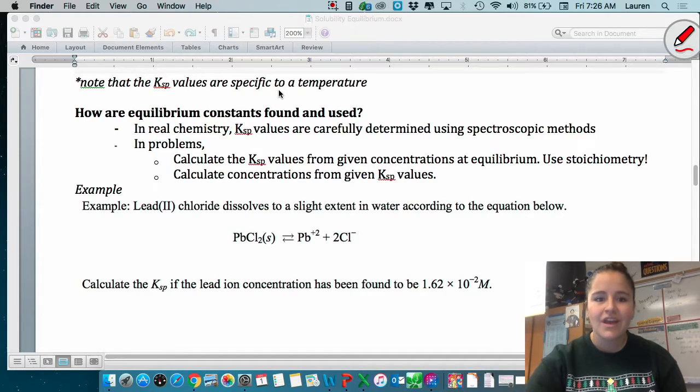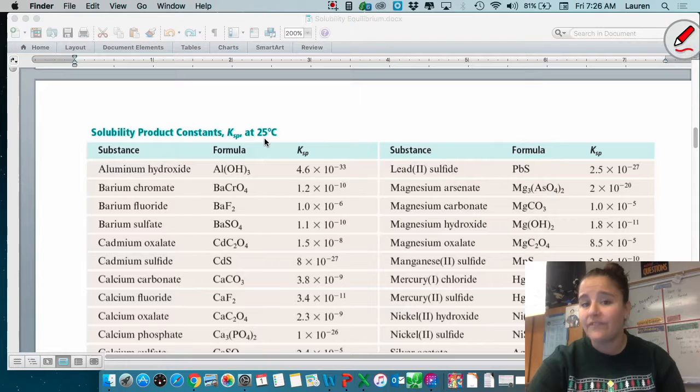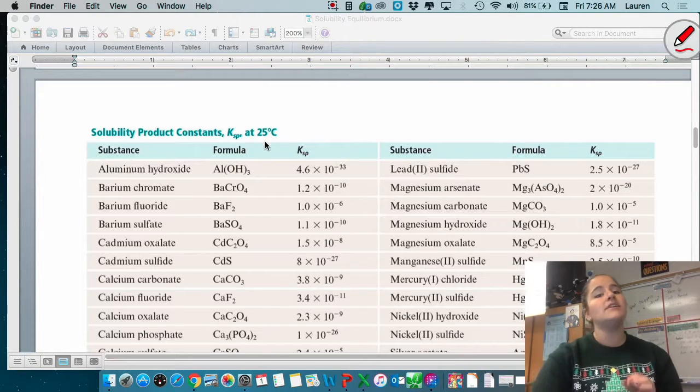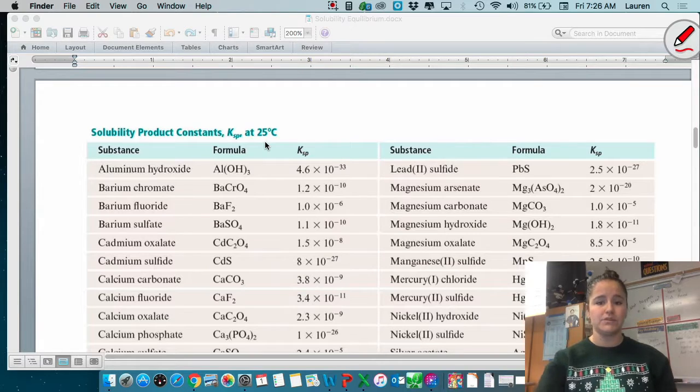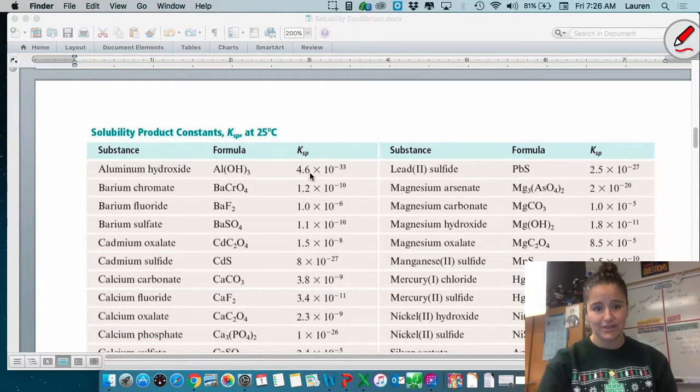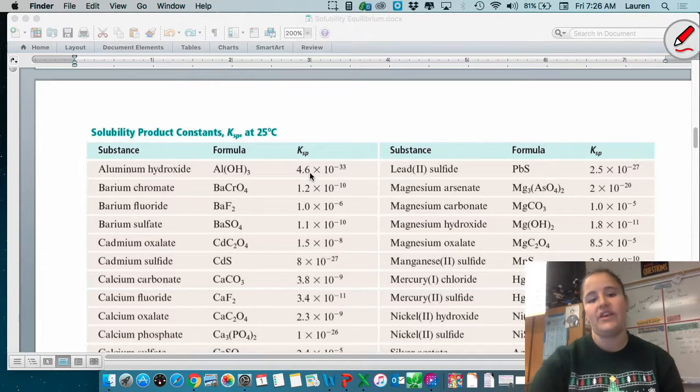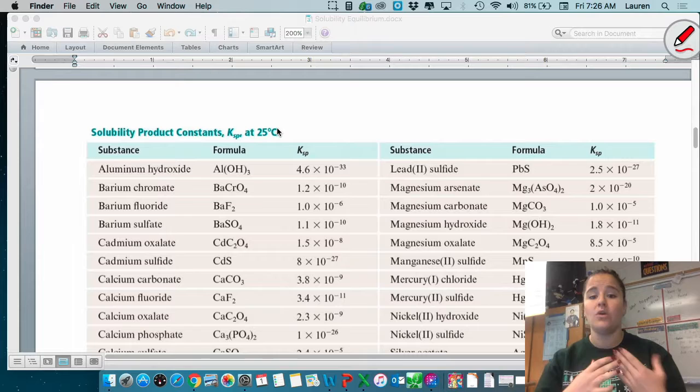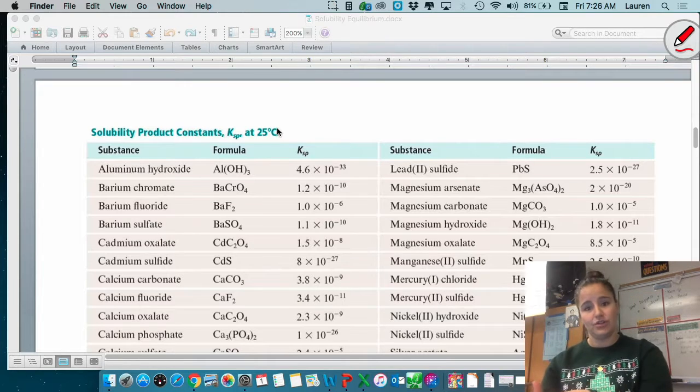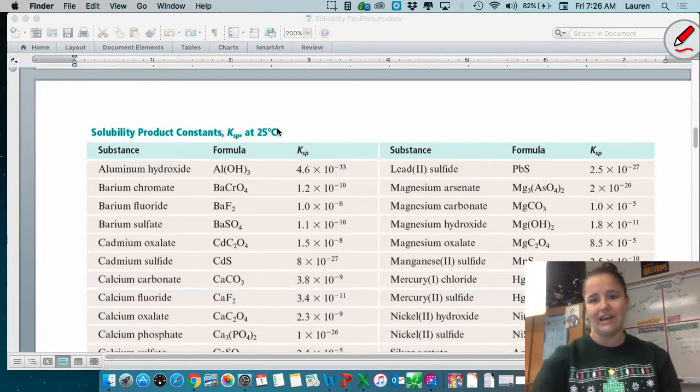Wanted to note one more thing. If you look up here, these are the solubility products at 25 degrees Celsius. They are specific to a temperature. Typically, at higher temperatures, more ions will dissolve and that changes this equilibrium expression. Well, not the expression, but it changes the value of it. So remember that they're specific to a temperature and always make sure that the temperature you're looking it up for is the temperature that you're doing the experiment at or doing the calculation at.